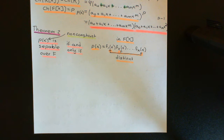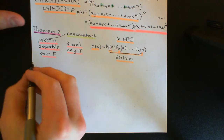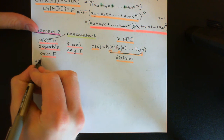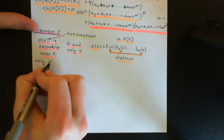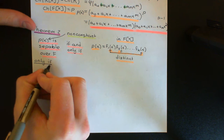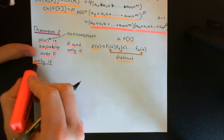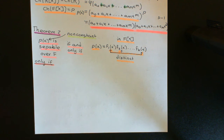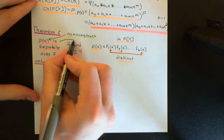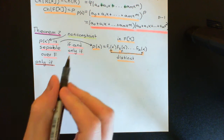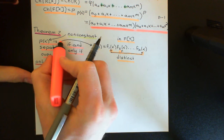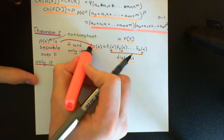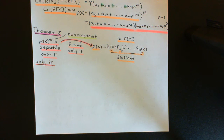Now let's prove this statement. We start with the 'only if' portion, which is the easier part. 'Only if' corresponds to proving that if P(X) is separable over F, then in the ring of polynomials over F, P(X) must have an irreducible factorisation where all of the irreducibles are distinct.